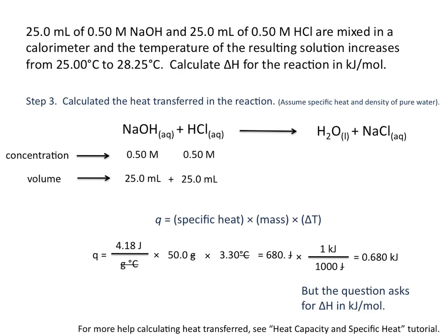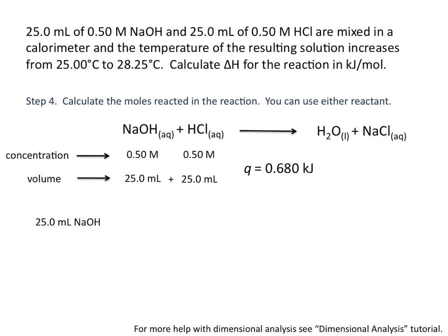Now remember, we're looking for delta H in kilojoules per mole. And in order to find that value, we need to know how many moles we're working with. So our fourth step is to calculate the number of moles reacted in the reaction. And to do this, you can use either reactant. And that may sound weird at first, but I'll show you why as we go through our problem.